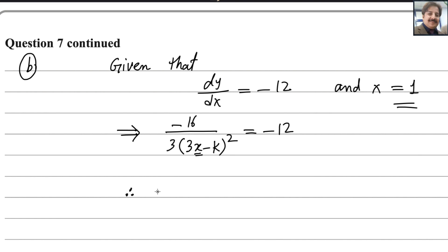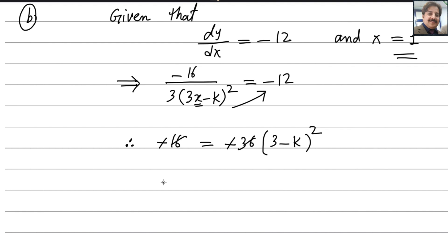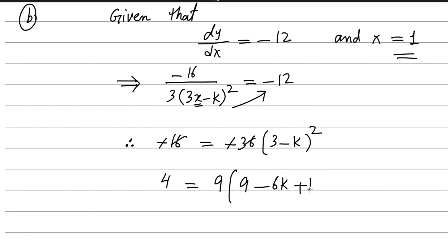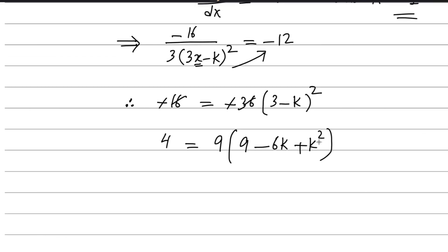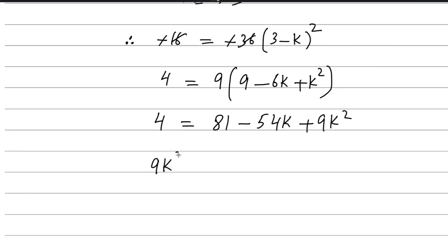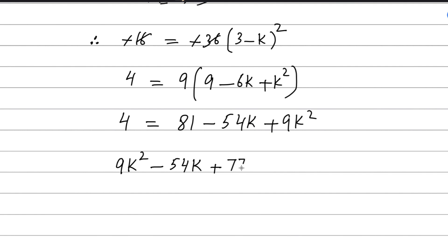Cross multiply and substitute x equals 1. So minus 16 equals 3 multiplied by negative 12, which gives negative 36 multiplied by 3 minus k squared. Expand the bracket and simplify: the two negatives cancel, then divide both sides by 4. This gives 4 equals 9 into 3 minus k squared. Expanding the bracket: 9 multiplied by 9 minus 6k plus k squared gives 81 minus 54k plus 9k squared. Rearranging: 9k squared minus 54k plus 77 equals 0.